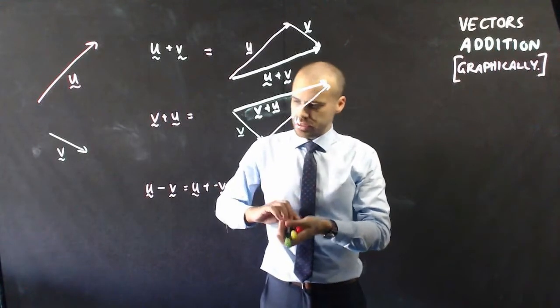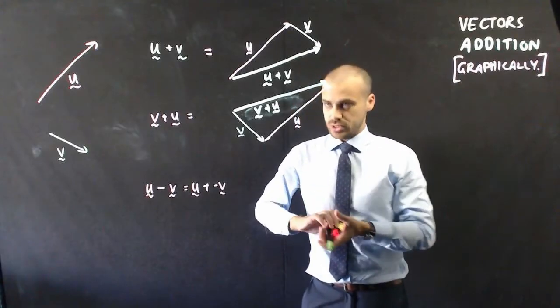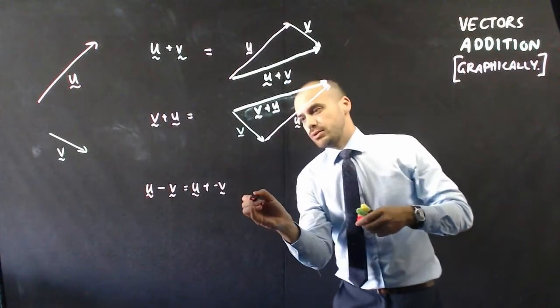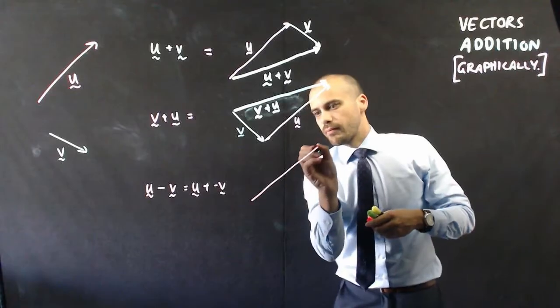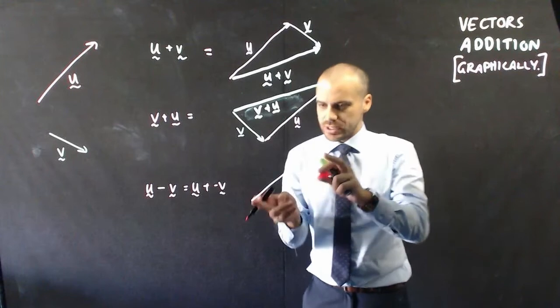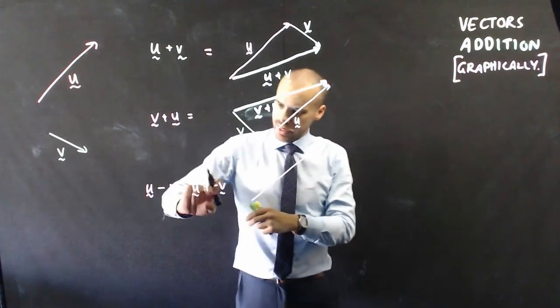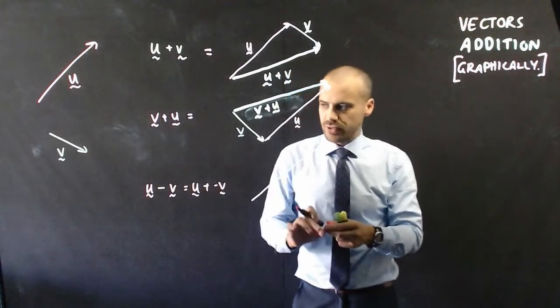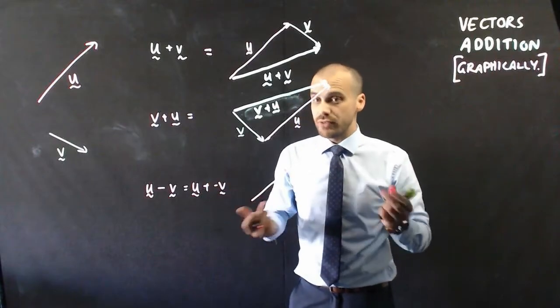Now, u is fairly straightforward. u is just this pink one that we've been doing the whole time. Like that. Seems to be getting longer every time, but you get the idea. That's u. Now, negative v, plus negative v. We need to know what negative v is.